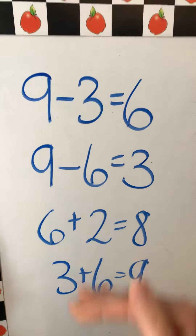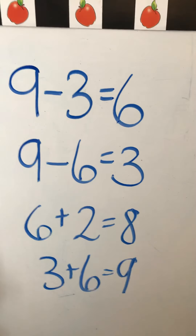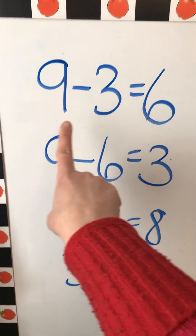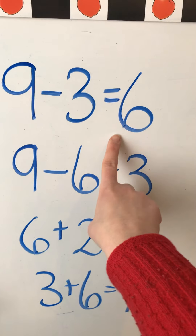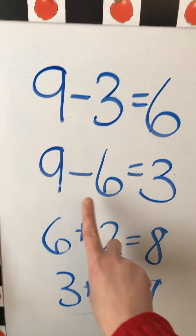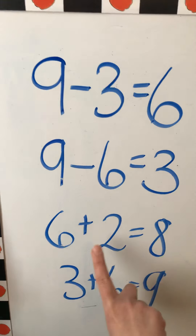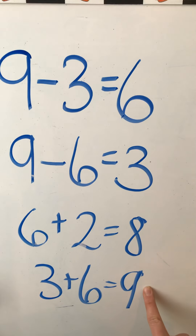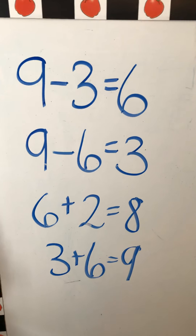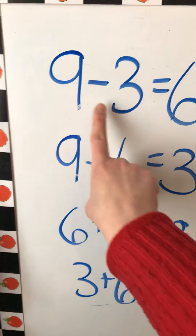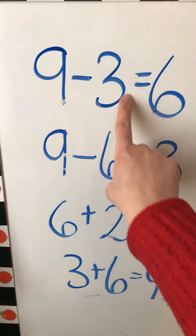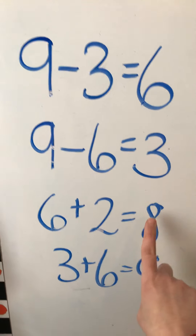I wrote some combinations on the board, and I want to take a look at them. One does not belong. Let's see if we can figure out how they are grouped together and which one does not belong. Read them with me: 9 minus 3 equals 6. 9 minus 6 equals 3. 6 plus 2 equals 8. 3 plus 6 equals 9. Do you know which one doesn't belong? Well, 9 minus 3 equals 6 and 9 minus 6 equals 3 — these are related. 6 plus 2 equals 8.